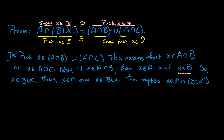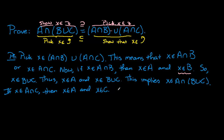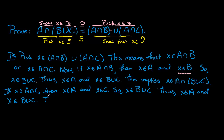We had two conditions: X is an element of A intersect B, which we already handled, or X is an element of A intersect C. If X is an element of A intersect C, this means X is an element of A and X is an element of C. By similar logic, X is in the union of C with any other set, so X is in B union C. Thus, X is an element of A and X is an element of B union C, which implies X is an element of A intersect (B union C).